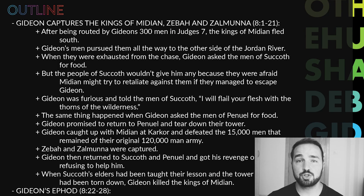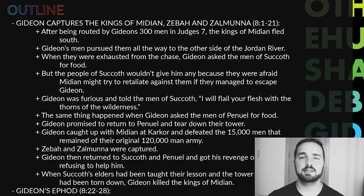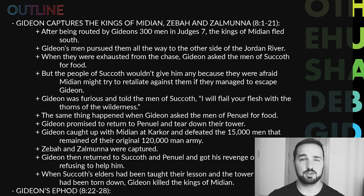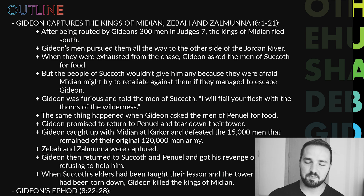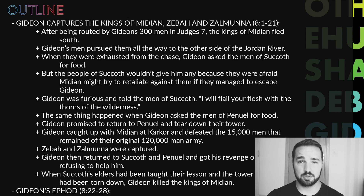Move over with me to page two, and we'll begin breaking this chapter down into sections. The first section I've entitled 'Gideon Captures the Kings of Midian, Ziba and Zalmunna.' This is the first 21 verses of the chapter. After being routed by Gideon's meager force of 300 men in Judges 7, the kings of Midian fled to the south, and Gideon's men pursued them all the way across the Jordan River. This was a pretty long ways — miles and miles.